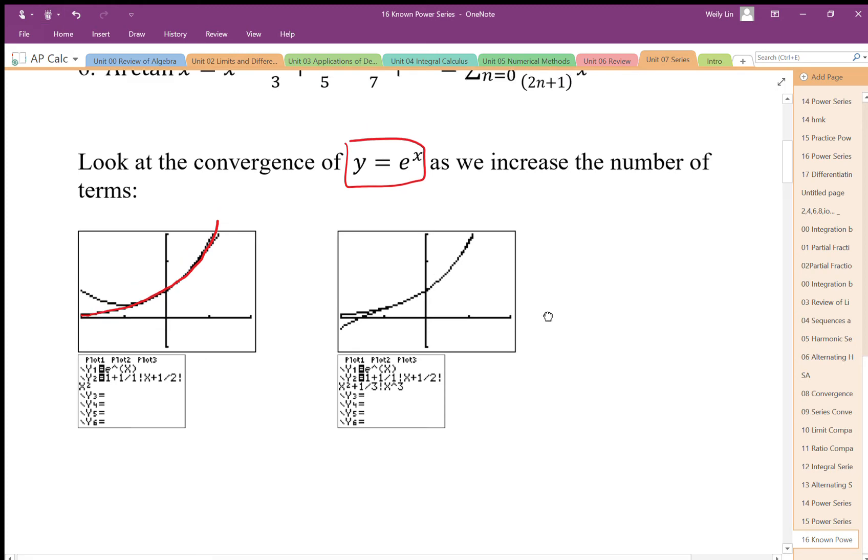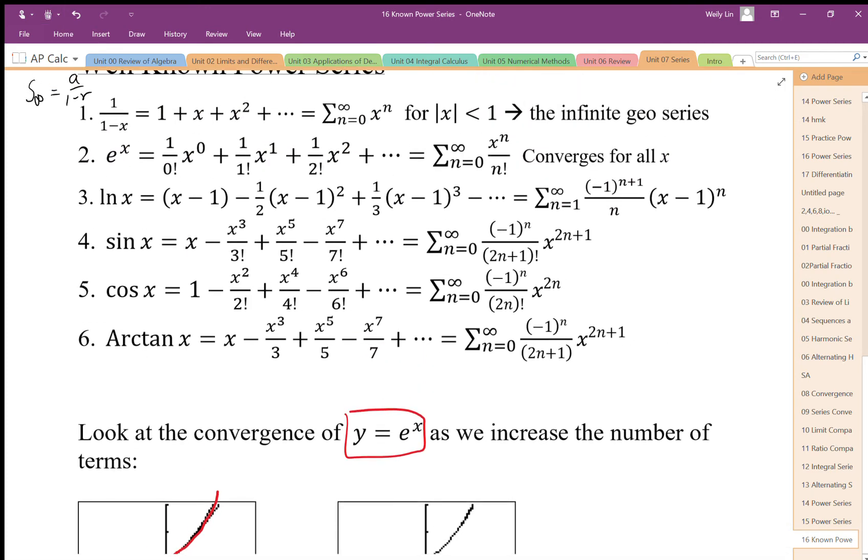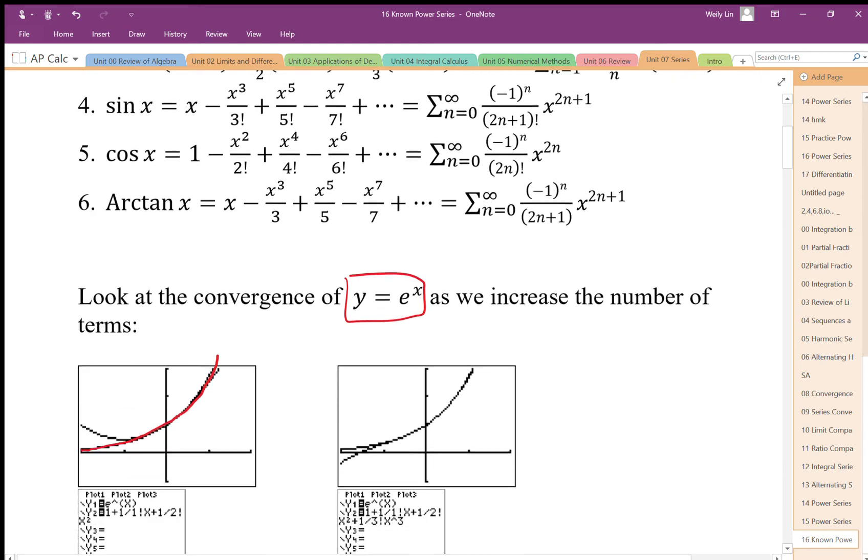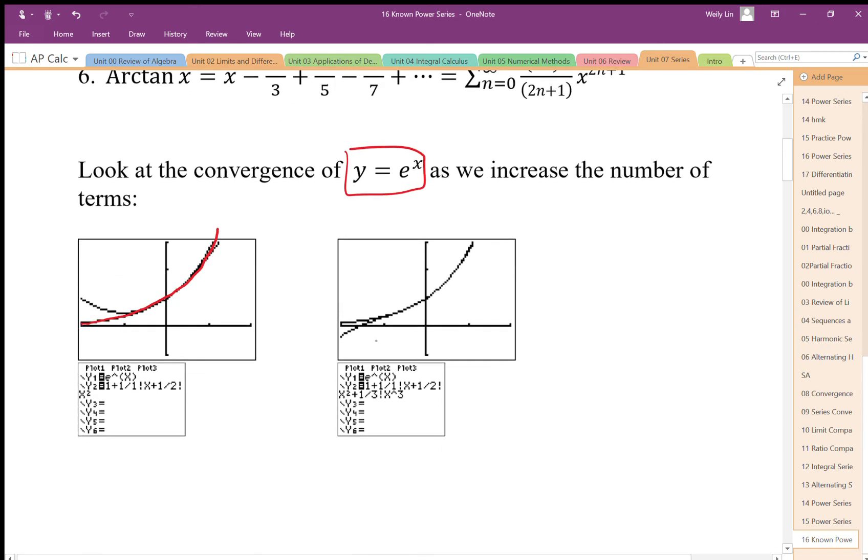So if I take a look at my series expansion here, it's just going to be 1 plus x plus 1 half x squared plus 1/6 x cubed, etc. And as I increase the number of terms of my polynomial, look what happens.